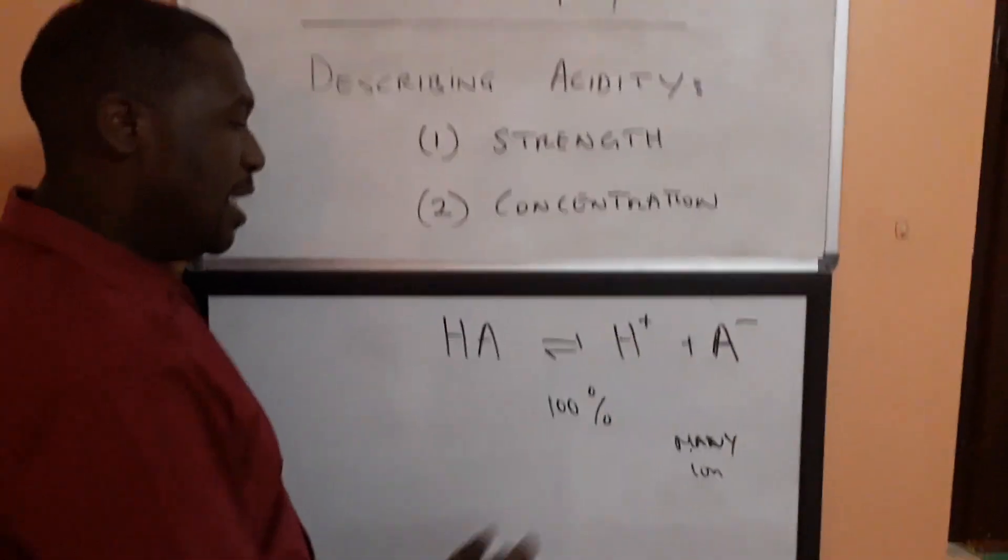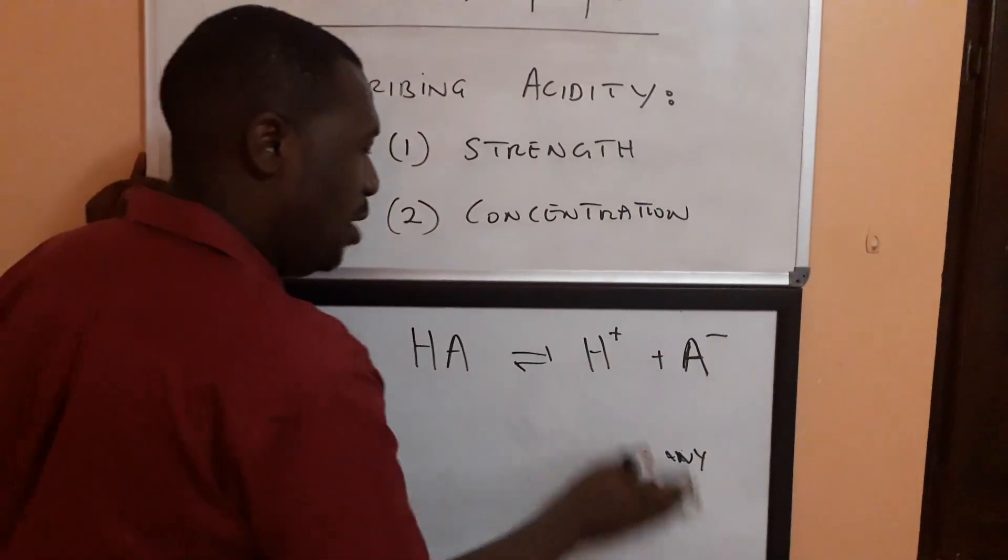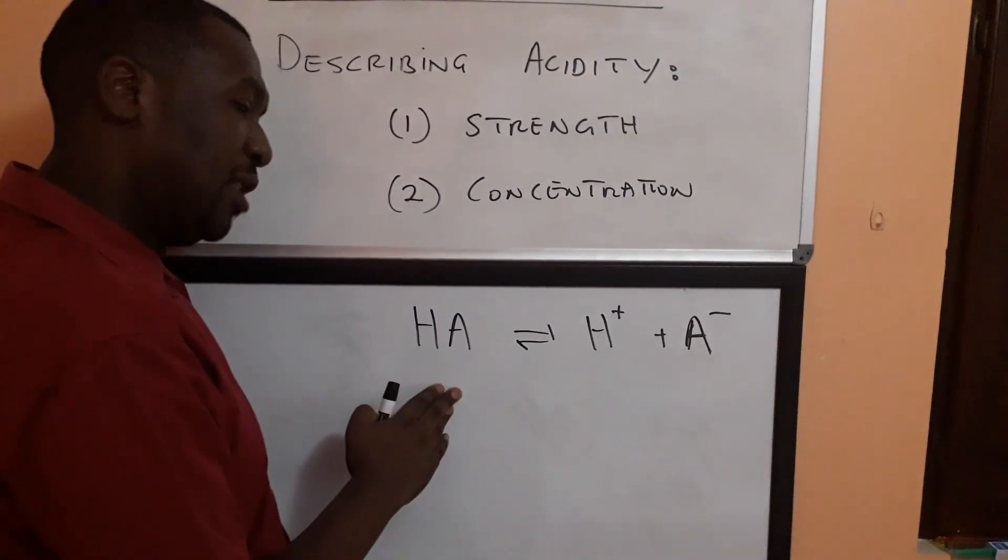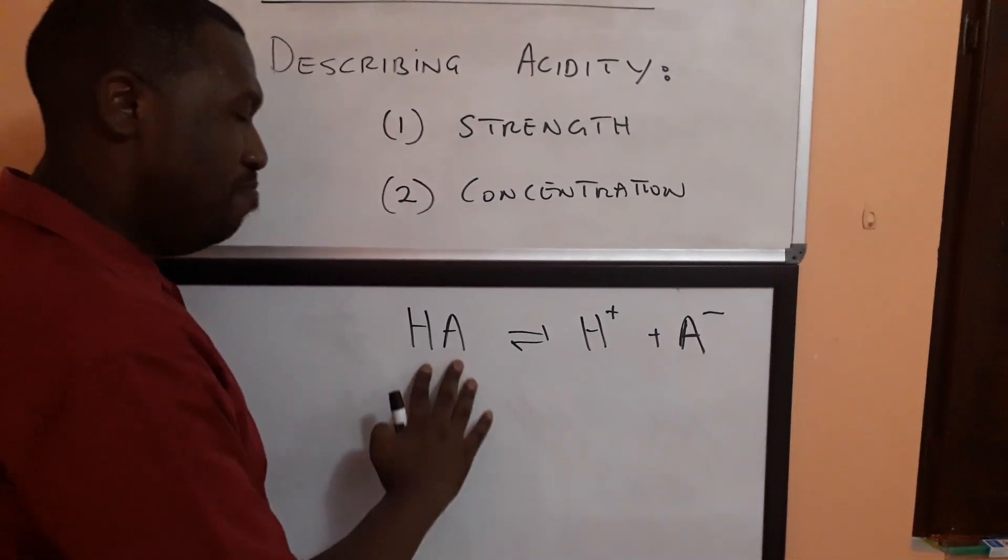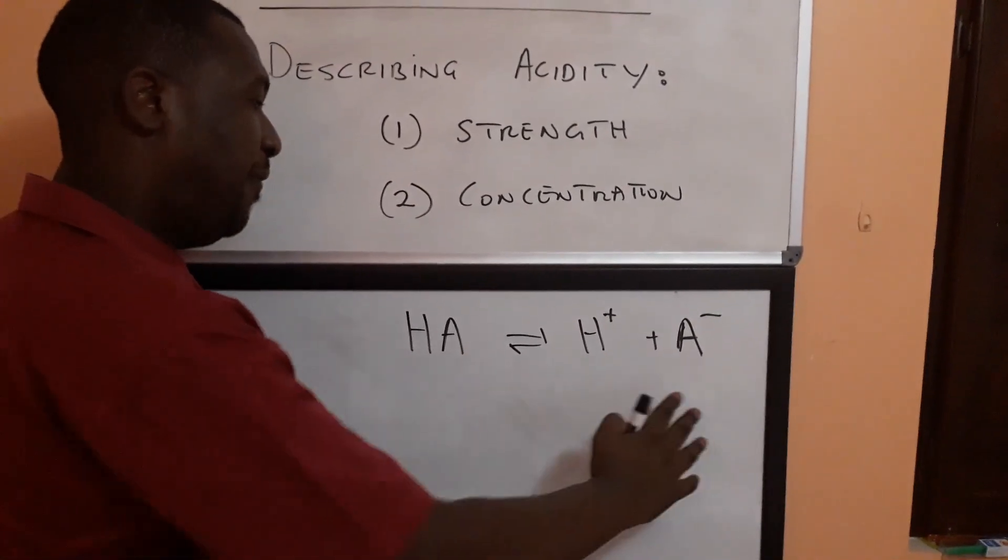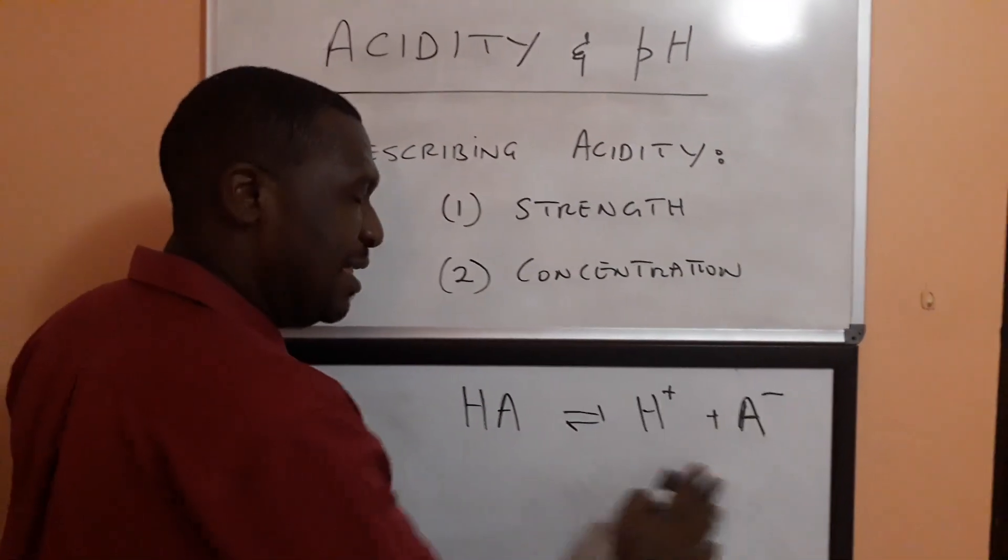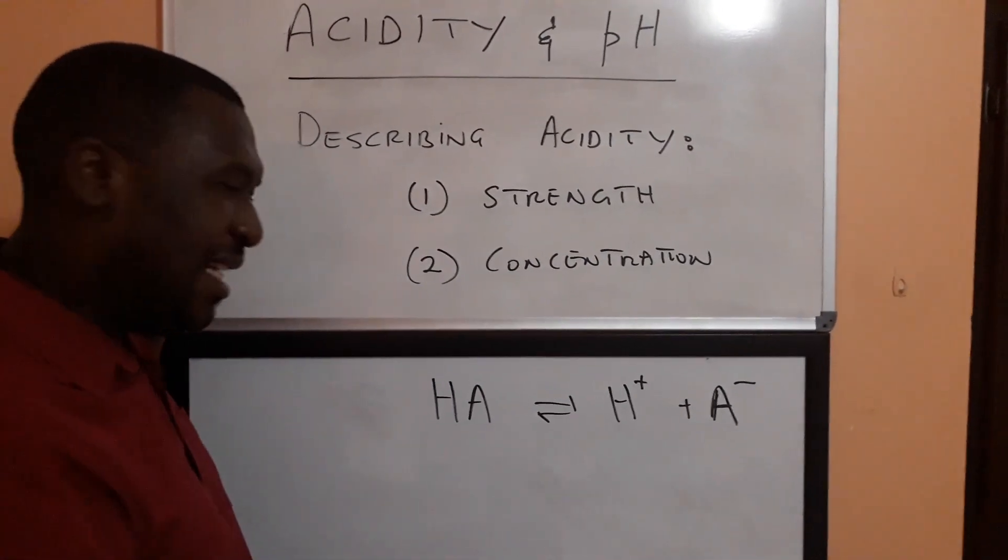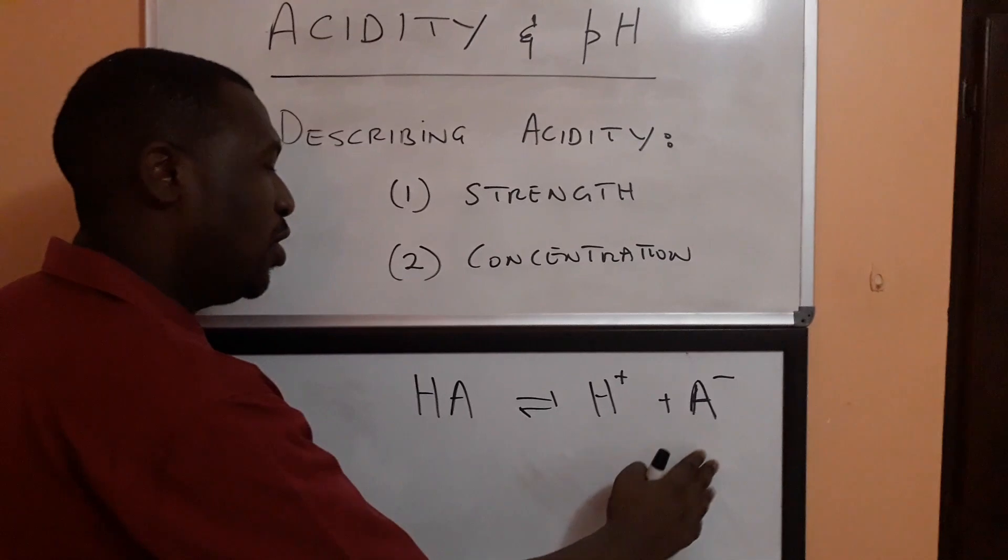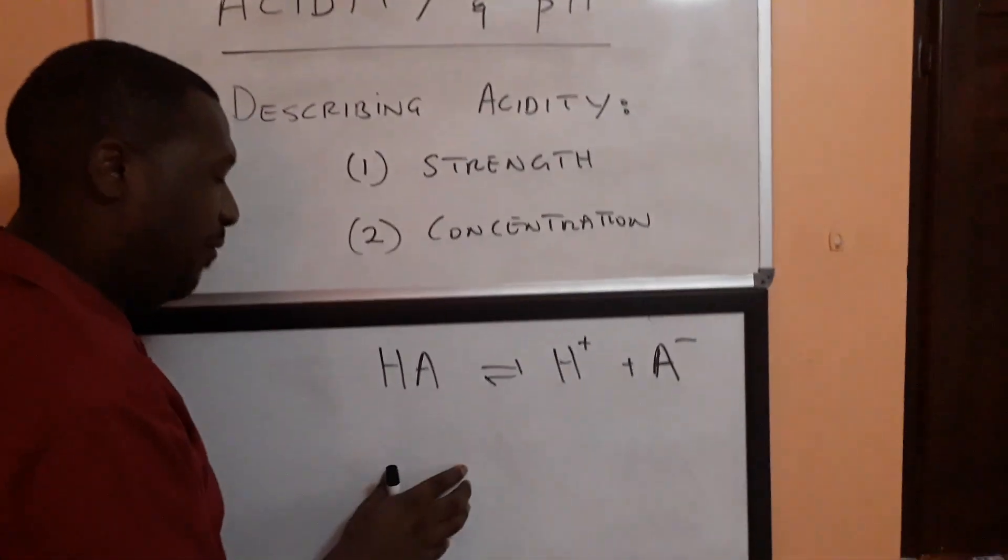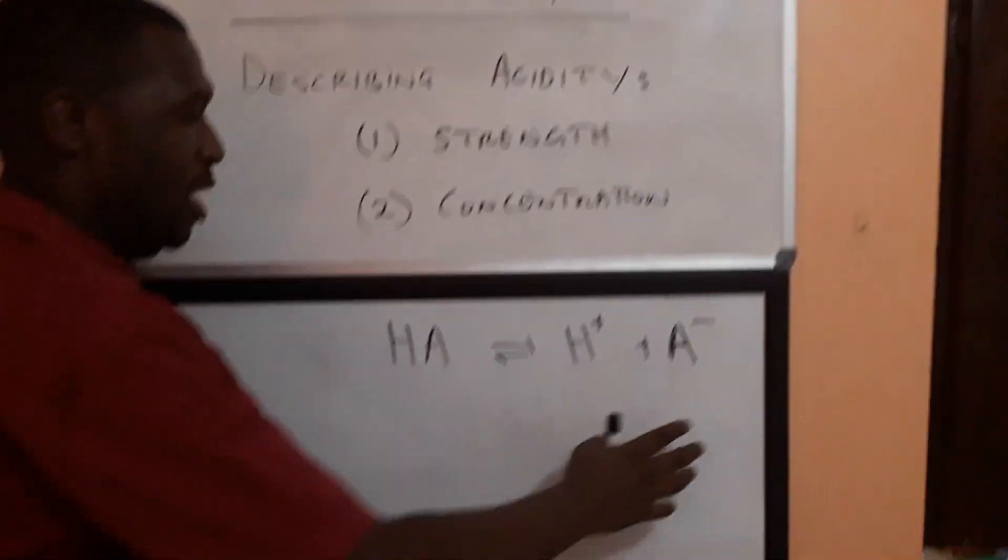On the other hand in a weak acid what you have is the opposite. The equilibrium lies to the left. So what you have is many molecules and few ions. A good way to describe a weak acid is to say that it's an acid that is only slightly ionized in aqueous solution. The vast majority of the acid would be in the form of the molecule not ions.